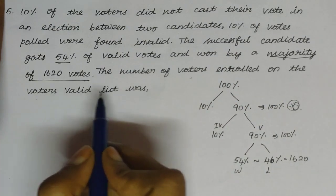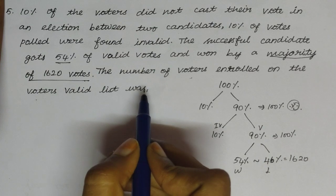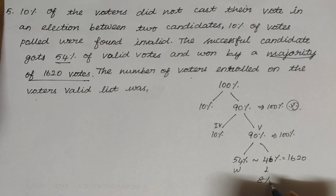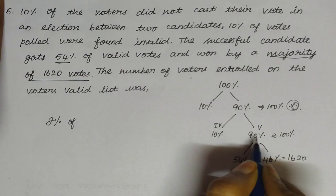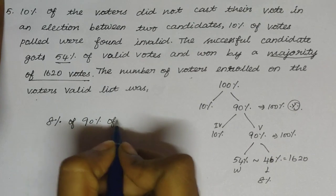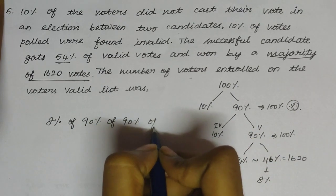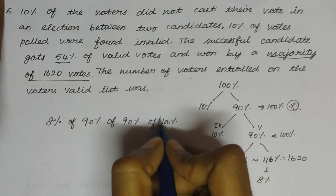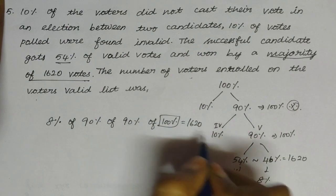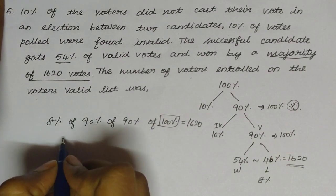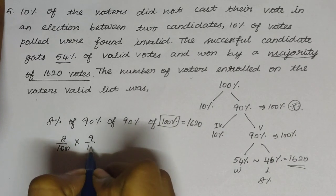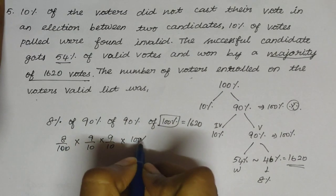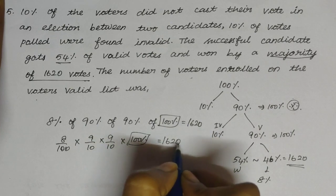The number of voters enrolled on the voters' valid list. Simplify: 54% minus 46% is 8% of valid votes equals 1,620. The equation is: 8% of 90% of 90% of 100% is equal to 1,620. That is, 8 by 100 into 90 by 100 into 90 by 100 into enrolled voters equals 1,620.